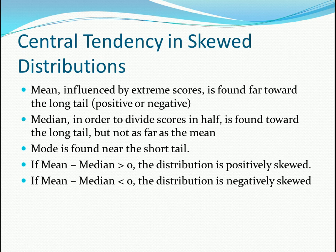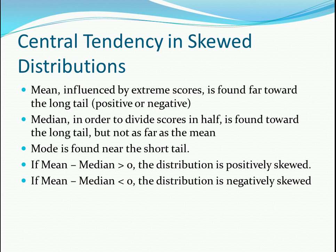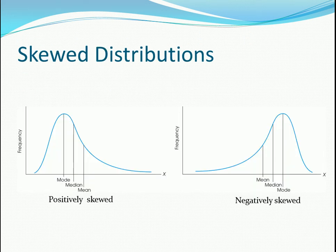For central tendency and skewed distributions — if you want some clarification, look at page 81 in your textbook. The mean, influenced by extreme scores, is found far towards the long tail, positive or negative. The median is found towards the long tail but not as far as the mean. The mode is found near the short tail. For a positively skewed distribution, you can see how these measures differ from symmetrical. Your mean is way closer out to the tail because of outlying scores that bring your average up from the middle of the distribution.